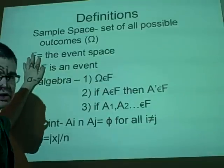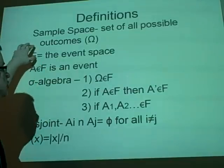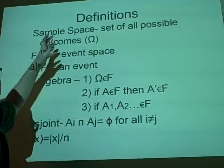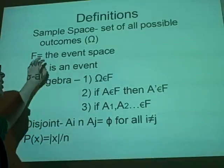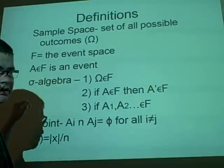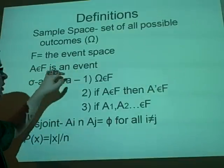F, now this is a subscript F, this is a superscript even. This is a fancy F that you'll see, but I couldn't find it to put on the slide. This is the event space, and if you find something that's an element of it, then this is an event.